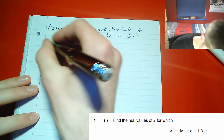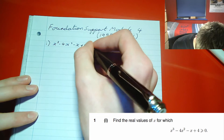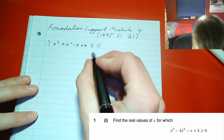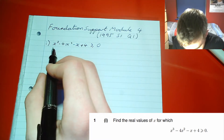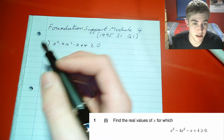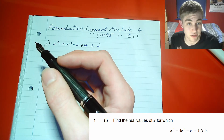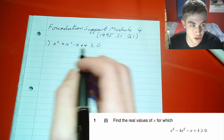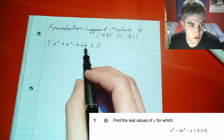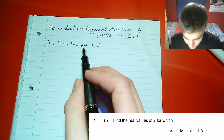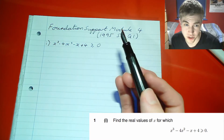We've got x cubed minus 4x squared minus x plus 4 is greater than or equal to zero, but for now we're just solving the equality. A good place to start is low numbers — STEP questions are often kind and give you a simple integer that solves it. Let's try zero: the constant term is four, so when x is zero we get four equals zero, which is not true.